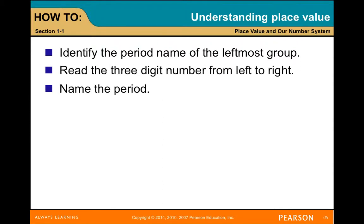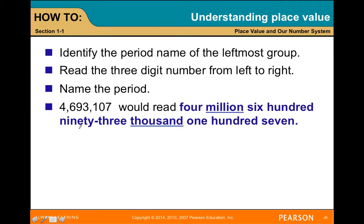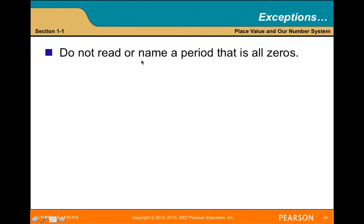To read a number, identify the period name from the leftmost group, read the three-digit number left to right, and name the period. For example, this number would be four million six hundred ninety-three thousand one hundred seven. In some other cultures, like Italian, French, or Spanish, you would read 'four millions,' but in the US we don't make it plural — it's just four million, three million, or two million.